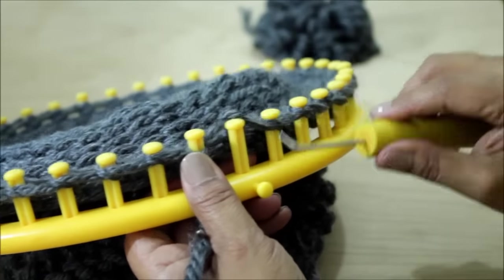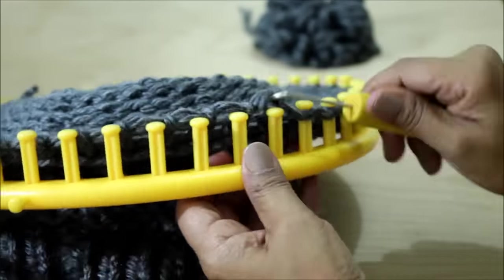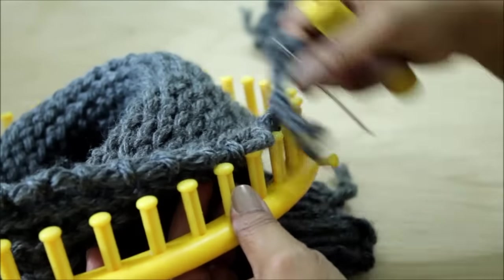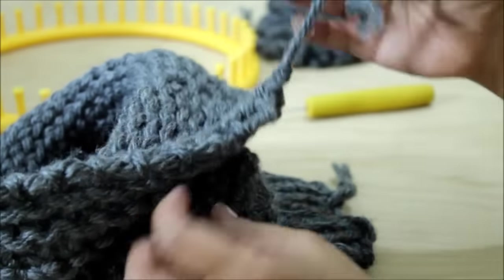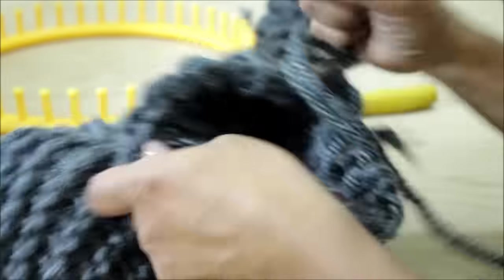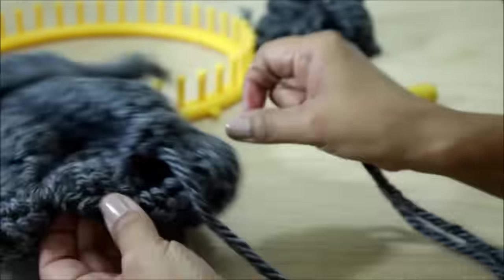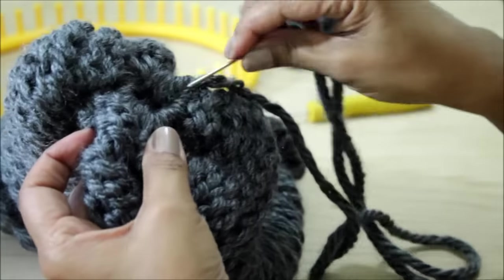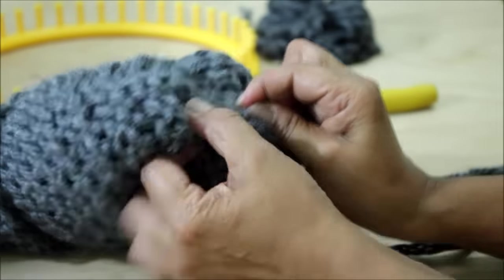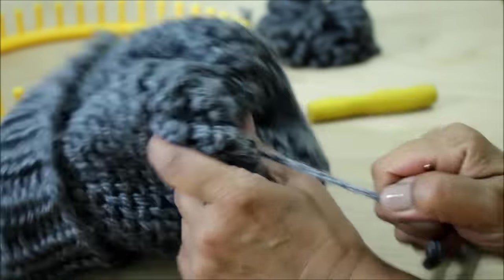Then take the loops off the loom. When you're done, pull on the drawstring to start closing your hat and then turn it inside out and you're going to sew those cast off loops in a circular manner. Sew and pull until you close the hat.